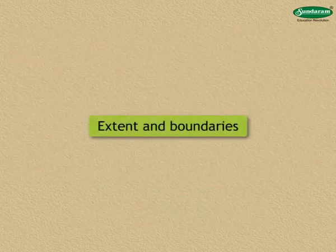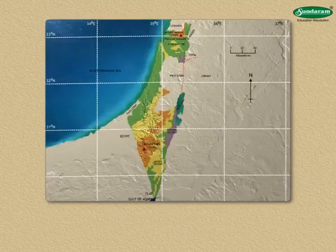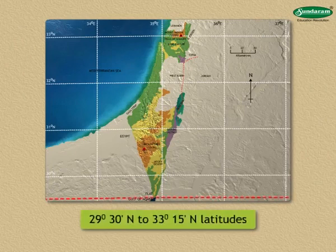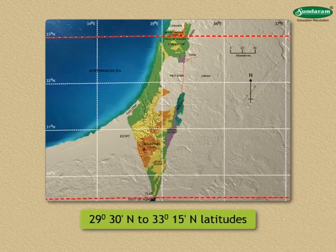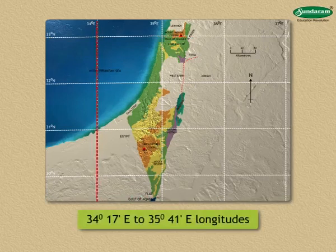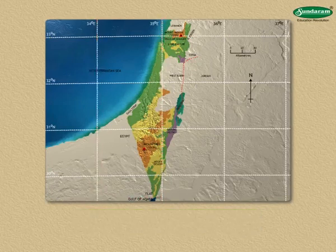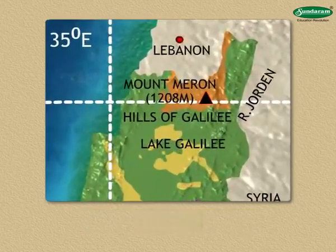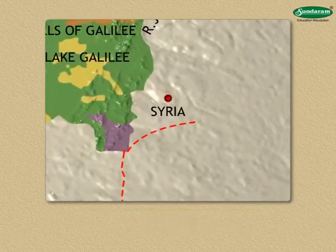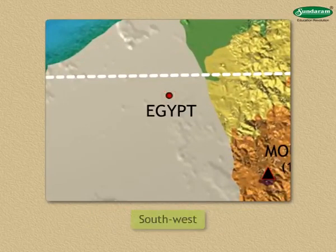Now let us study about extent and boundaries. The extent of this country is from 29 degrees 30 minutes north to 33 degrees 15 minutes north latitudes, and from 34 degrees 17 minutes east to 35 degrees 41 minutes east longitudes. Lebanon is to the north of Israel, Syria to the northeast, Jordan to the east, and Egypt to the southwest.